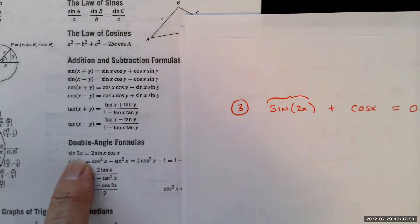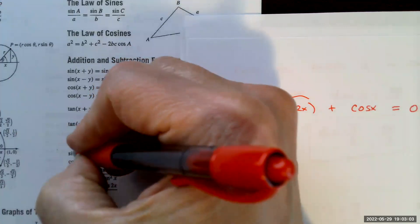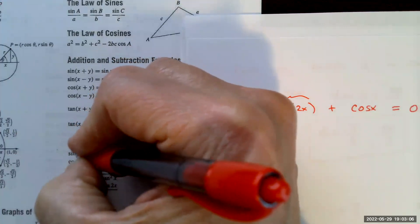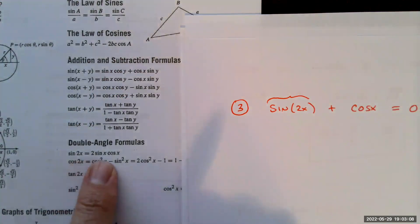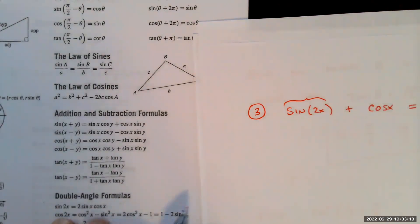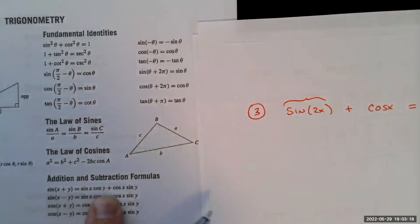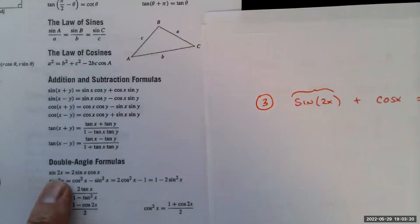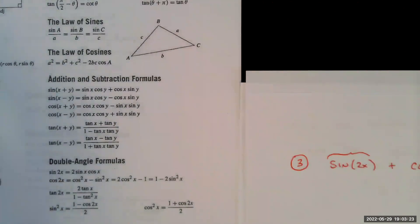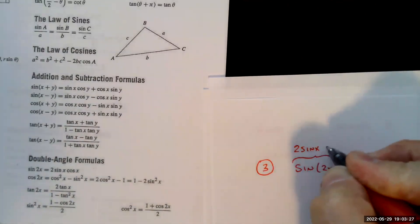You can write sine(2x) as sine(x + x) and apply the addition formula for sine to prove this double angle identity. Going back to the equation sin(2x)cos(x) = 0, we substitute to get 2sin(x)cos(x) · cos(x) = 0.